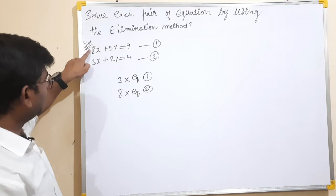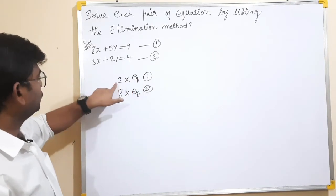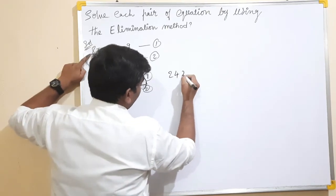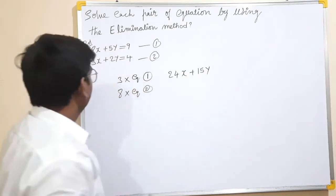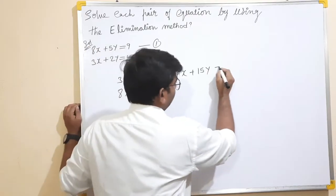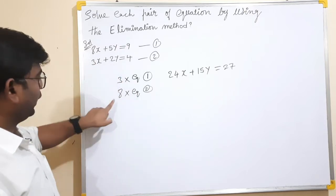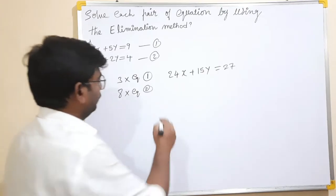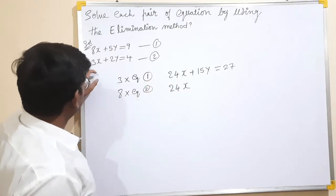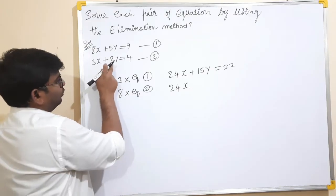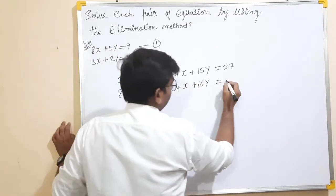So, multiplying equation 1 by 3: 3 times 8 equals 24x, and 3 times 5 equals 15y, and 3 times 9 equals 27. That gives us 24x + 15y = 27. Next, multiplying equation 2 by 8: 8 times 3 equals 24x, and 8 times 2 equals 16y, and 8 times 4 equals 32. That gives us 24x + 16y = 32.